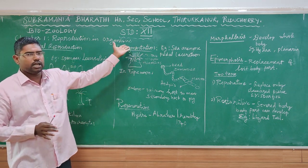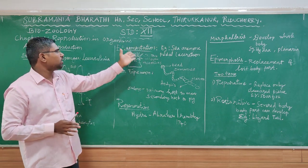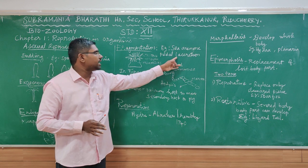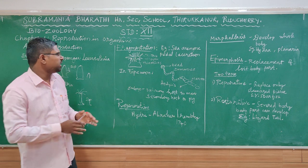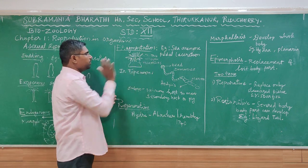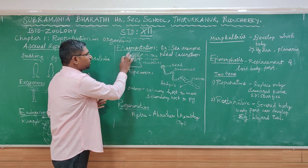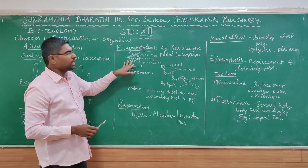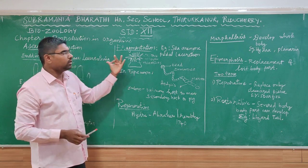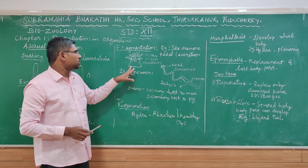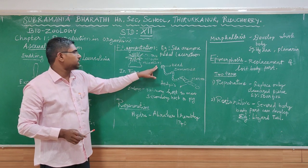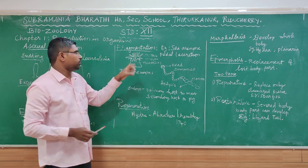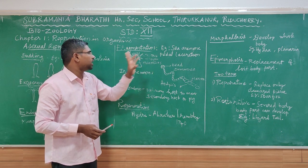Next is pedal laceration, seen in sea anemones. A large individual sea anemone has a structure with two layers. The anterior part has finger-like projections called tentacles. The tentacles are used to capture prey, and there is a central mouth.